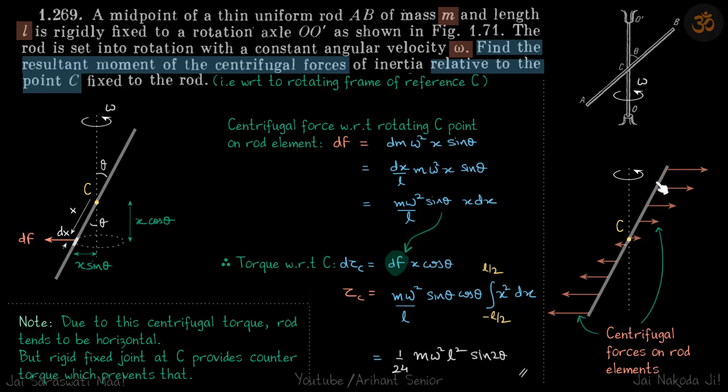Next is, due to this centrifugal torque, the rod tends to go horizontal. You can imagine that the rod will try to stabilize and become horizontal. Now it does not because the rigid fixed joint at C provides counter torque that prevents it.